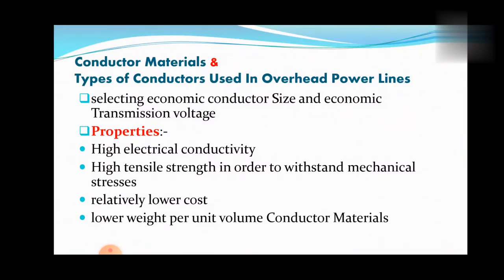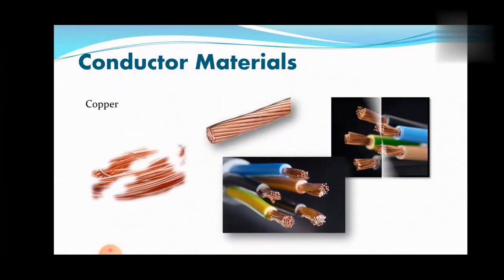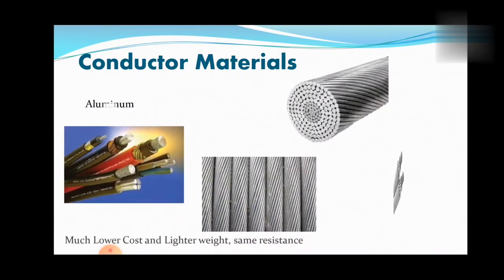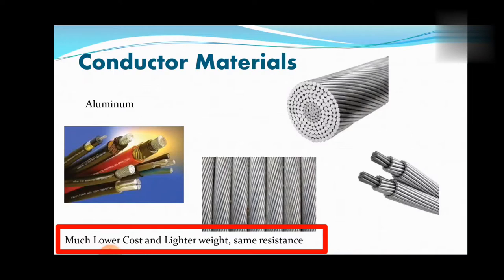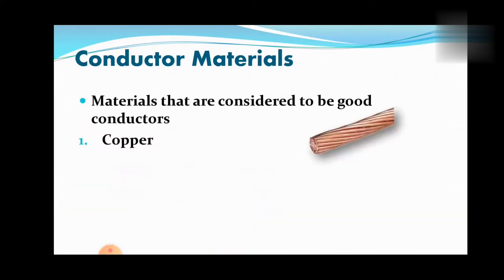Copper was the preferred material for overhead conductors in earlier days, but aluminum has replaced copper because of the much lower cost and lighter weight of the aluminum conductor compared with a copper conductor of the same resistance. Next, I am explaining some materials that are considered to be good conductors: copper, aluminum, cadmium copper, and other materials.